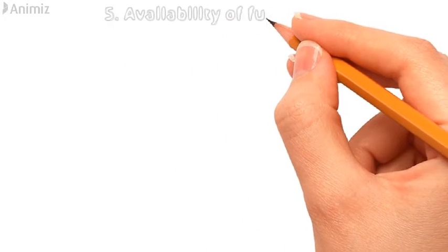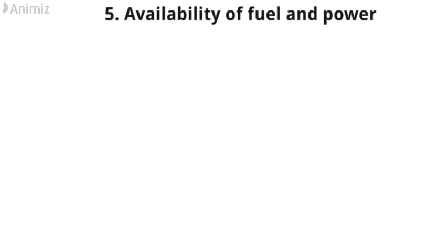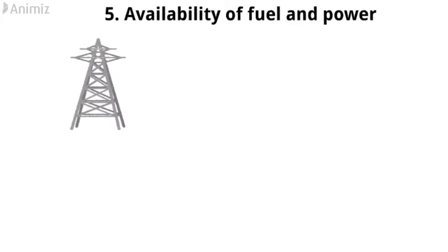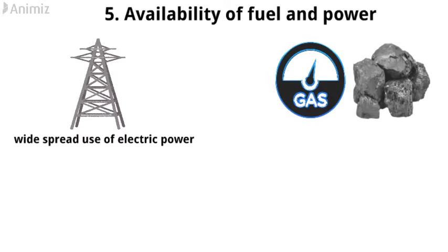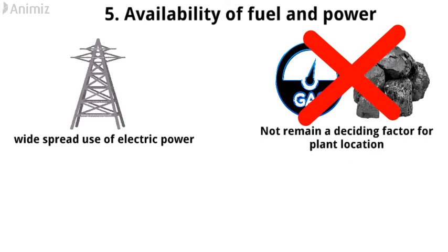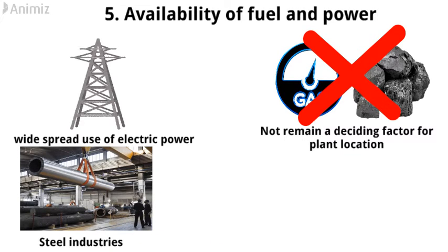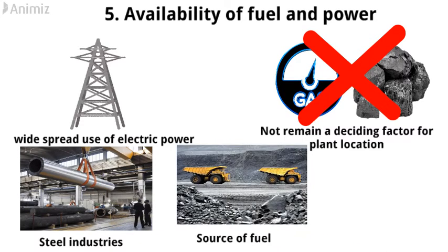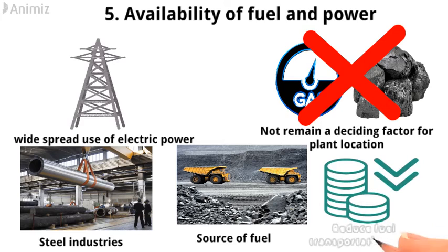Number 5: Availability of fuel and power. Because of the widespread use of electric power, in most cases fuel has not remained a deciding factor for plant location. Even then, steel industries are located near the source of fuel to reduce fuel transportation costs.